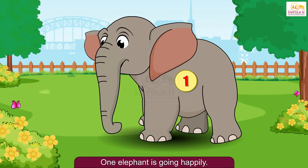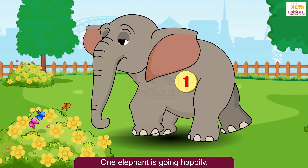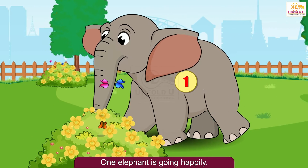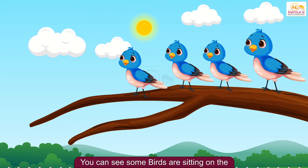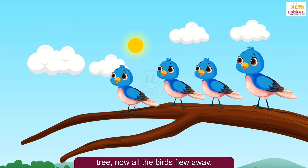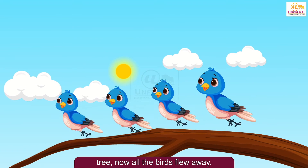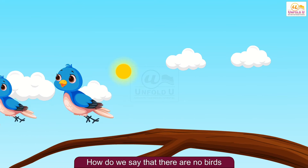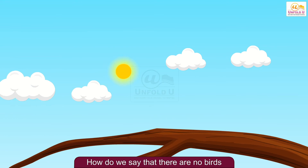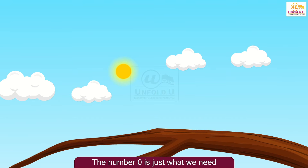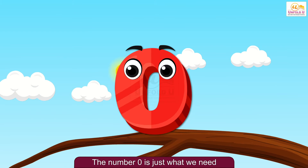1 elephant is going happily. You can see some birds are sitting on the tree. Now all the birds flew away. How do we say that there are no birds on the tree? The number 0 is just what we need, because 0 represents absence of a thing.